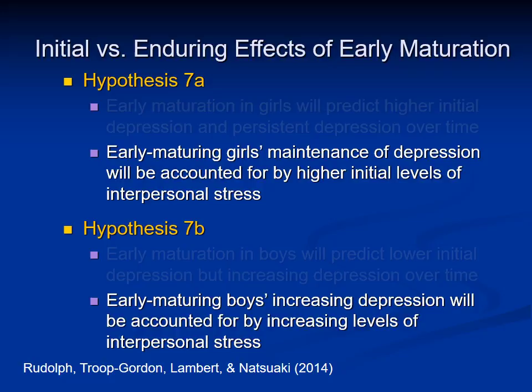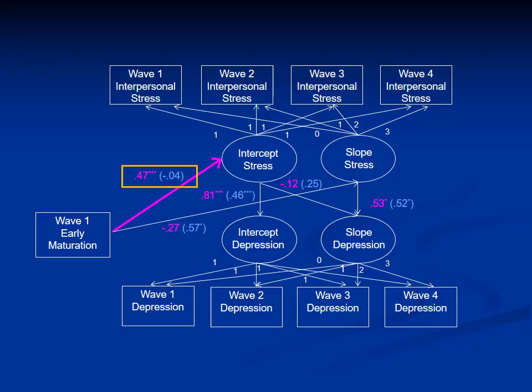We conducted latent growth curve analyses with initial levels of pubertal maturation predicting initial and changing levels of interpersonal stress, which predicted initial and changing levels of depression. Looking at the pink bolded path with numbers in yellow boxes: early maturation predicted more initial interpersonal stress for girls but not for boys. Initial interpersonal stress predicted higher initial levels of depression for both girls and boys, although the relationship was significantly stronger for girls. And for girls, there was a significant indirect effect of early maturation on initial depression through initial interpersonal stress.